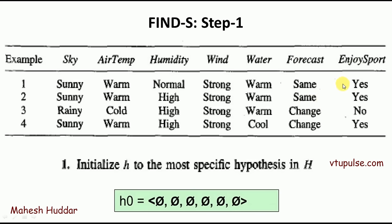Given these conditions, the person is enjoying the sport on some days and not enjoying it on others. According to the FINDES algorithm, the first step is to initialize the hypothesis to the most specific hypothesis in the hypothesis space. That is, H0 is equivalent to all nulls — all 6 attribute values are set to null.